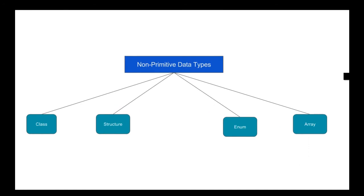The non-primitive data types include class, structure, enumeration, and arrays. In our lessons we will not be dealing with classes, structures, or enumerations as they are above our current level. We will be dealing with arrays in future lessons.